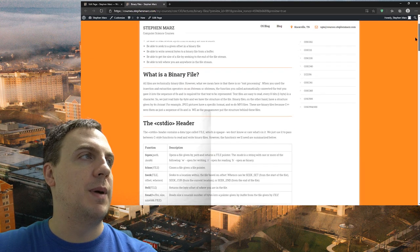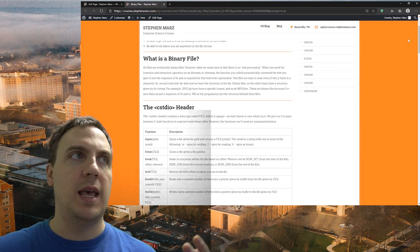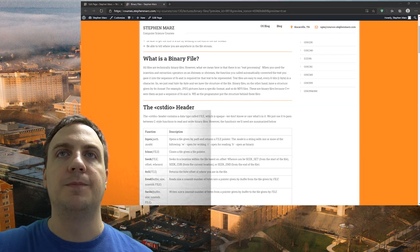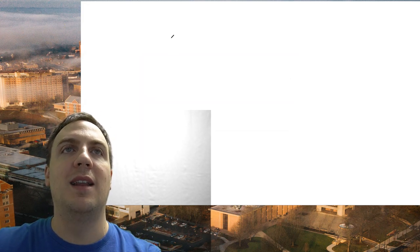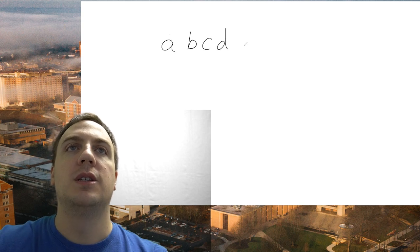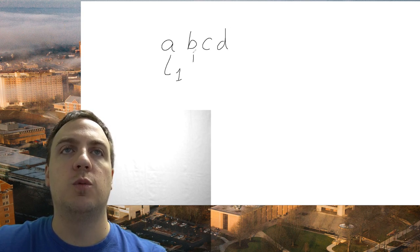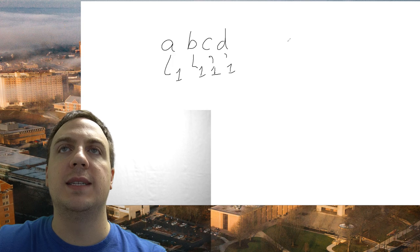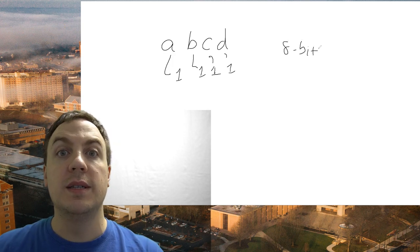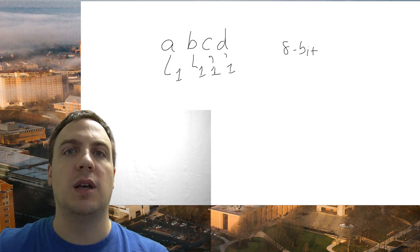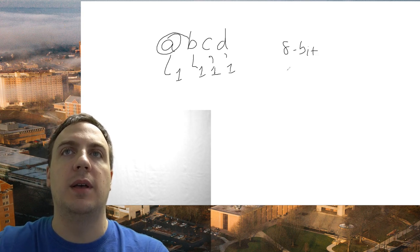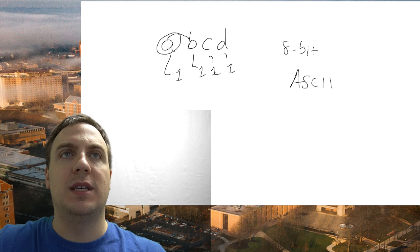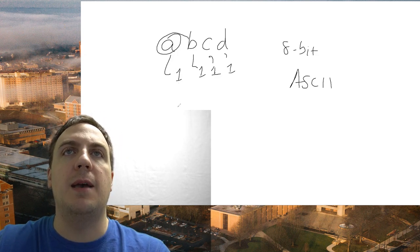Let's talk about what a binary file is. Everything we've done up till now — if we have A, B, C, D — each of those is one character, where each character is eight bits. So that's eight zeros and ones stuck together. We can read a text file easily because all we do is read eight bits at a time, decode what it is, look in the ASCII table to see what number corresponds, and we get a character like lowercase A.